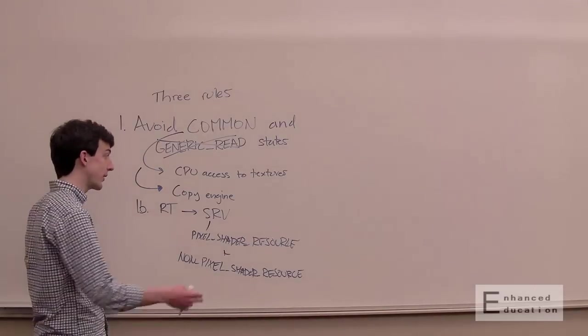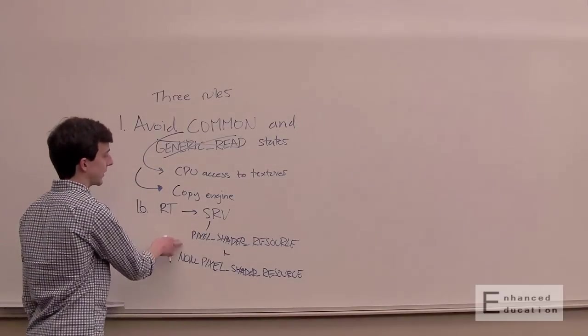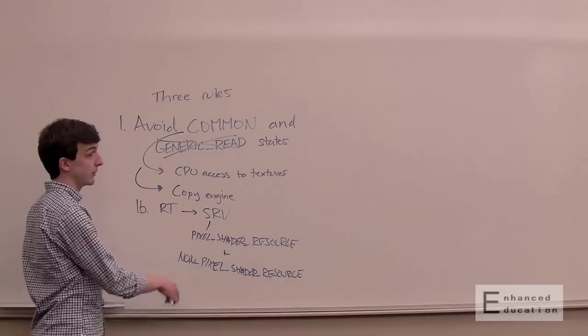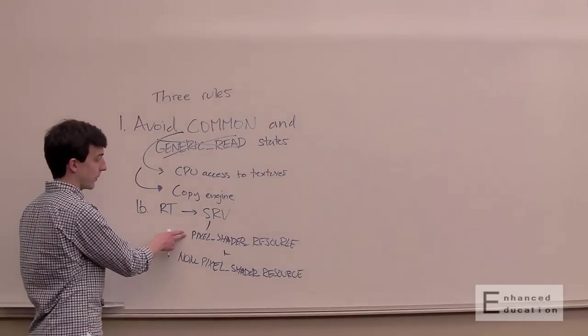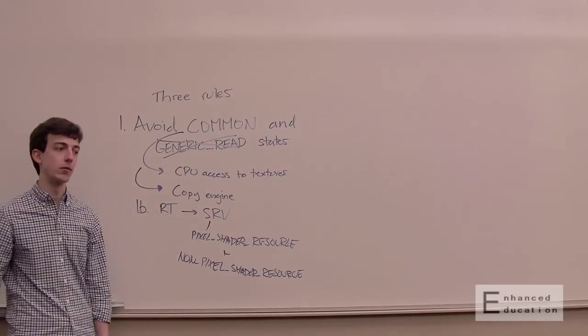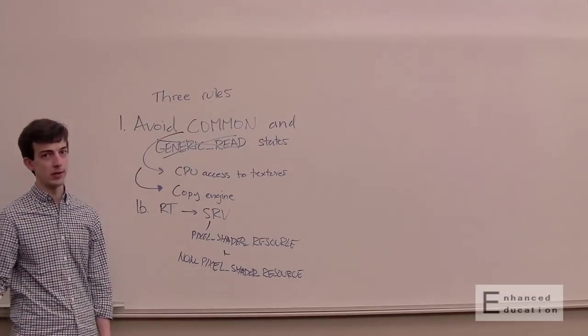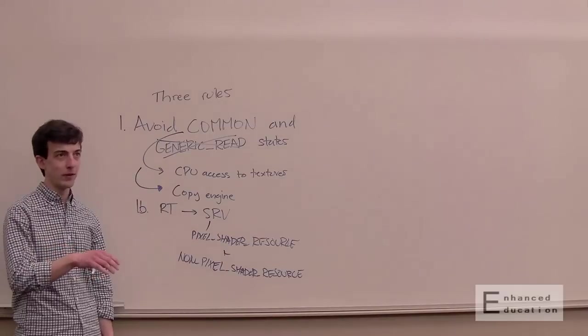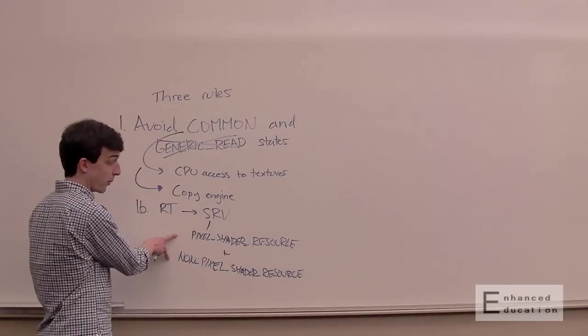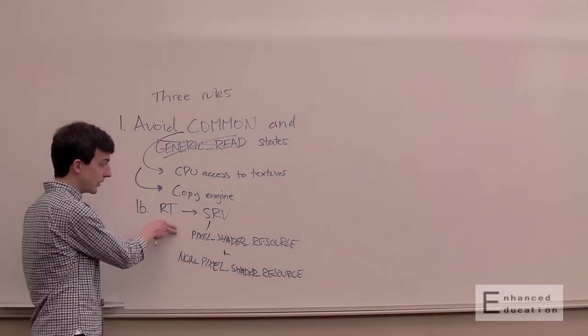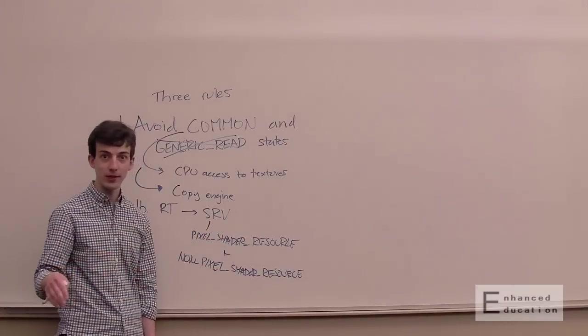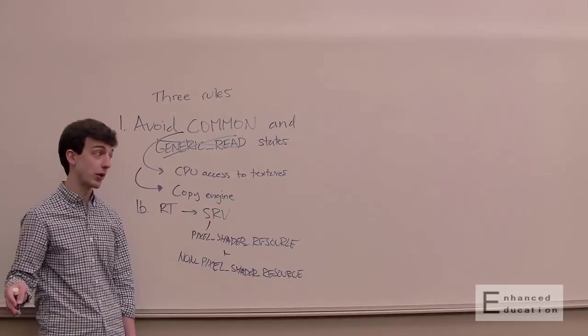So it is beneficial to only transition an SRV to the actual state that it's needed. Are you going to be using it in the pixel shader? Great, only do this one. Are you going to be using it on compute? Only do this one. If you do both, the hardware isn't going to know if you need to consume it on compute, and so you need to wait for previous work to finish before it's visible to compute. It's going to do more work than you actually need to. So while you're permitted to transition to both, only use the one that you need.